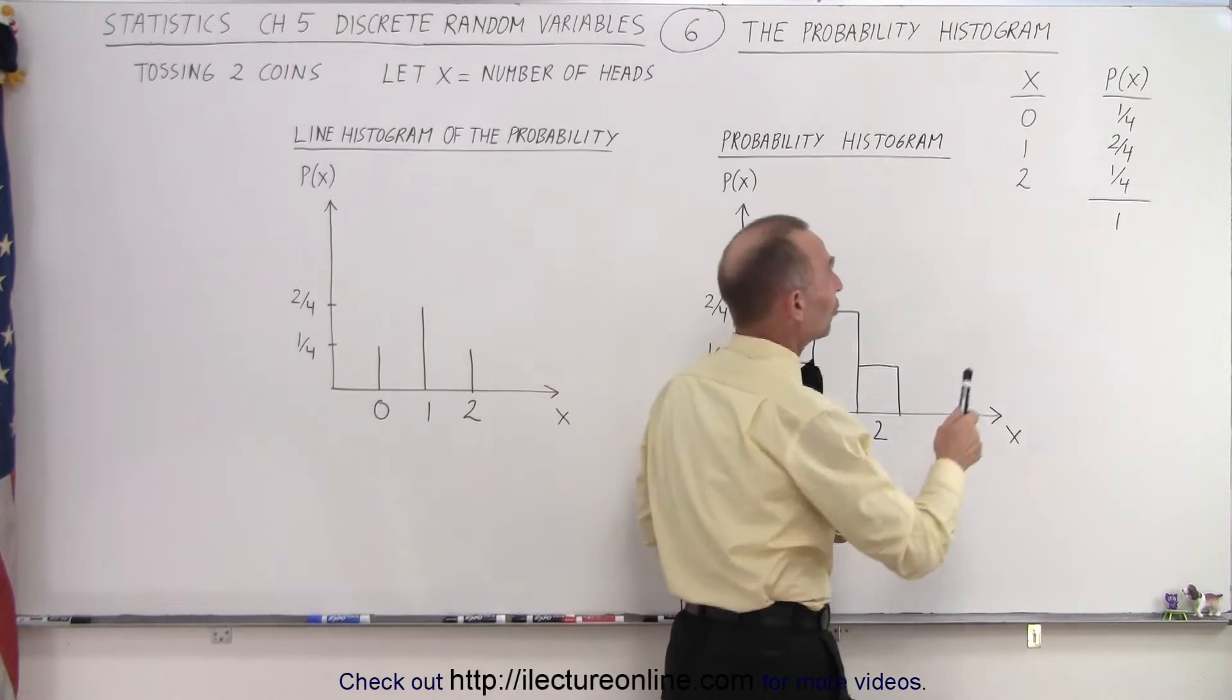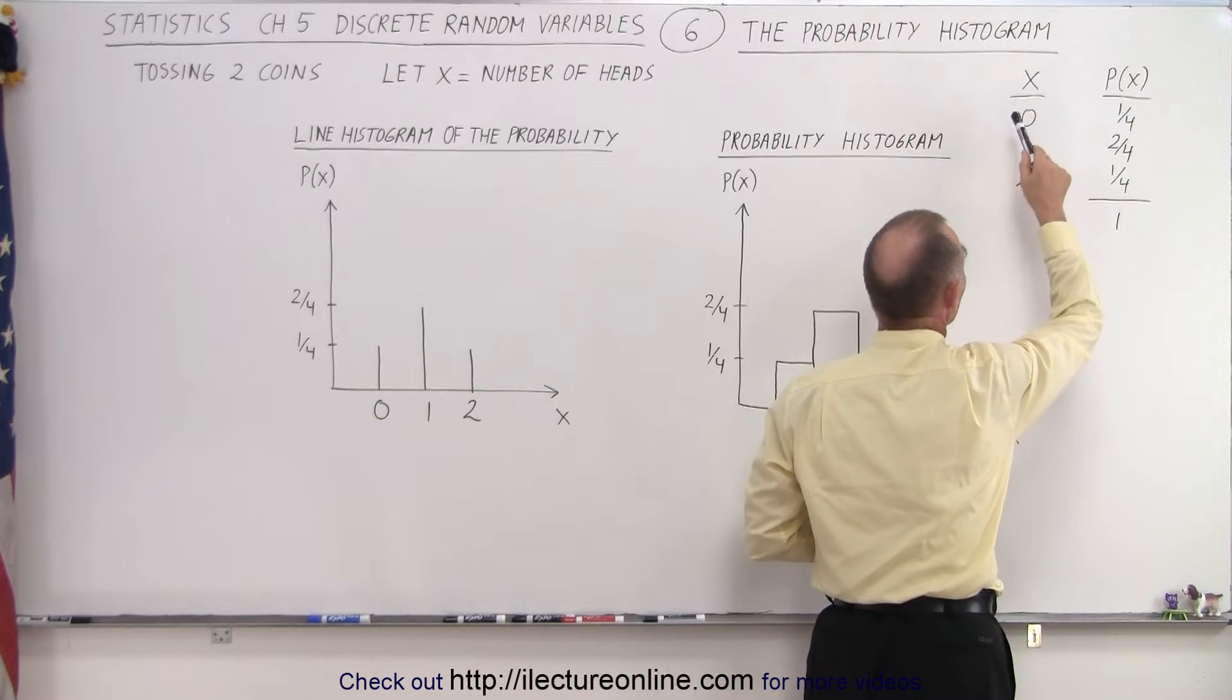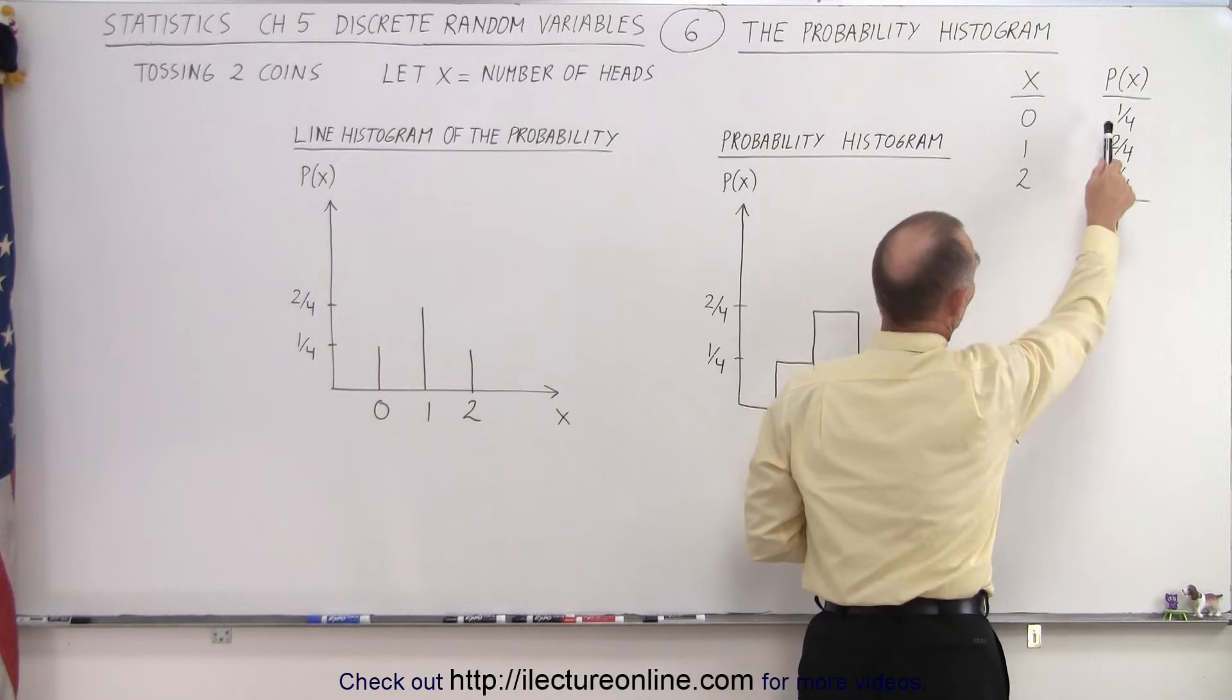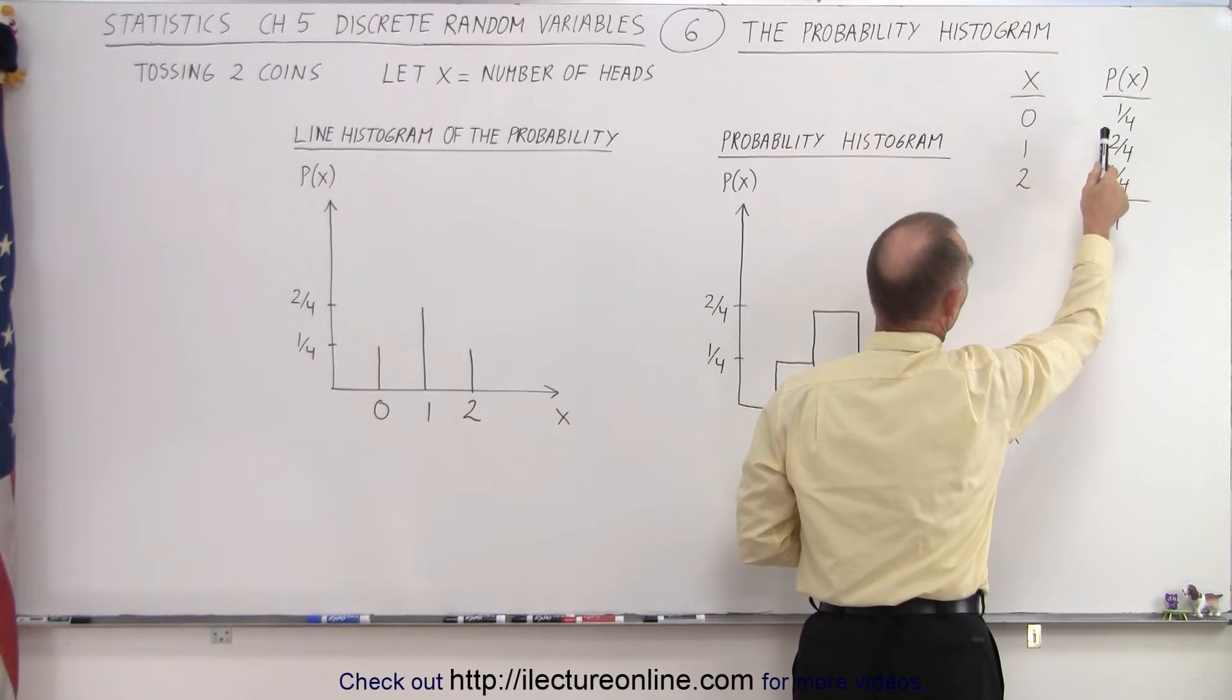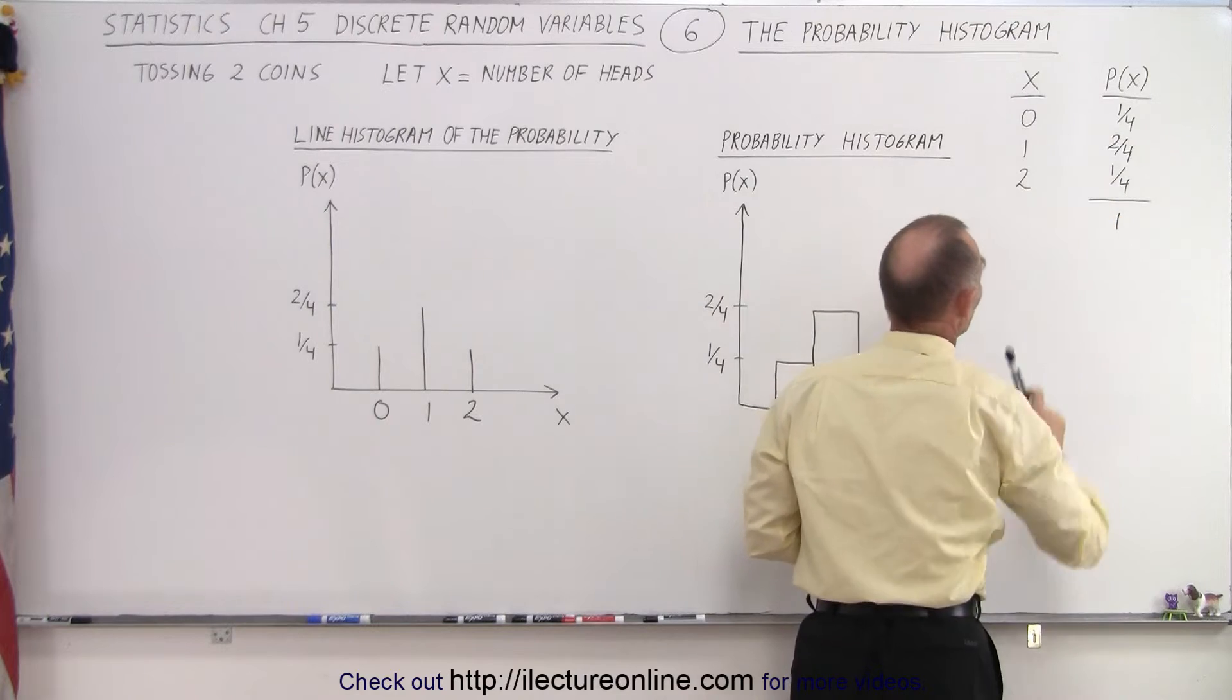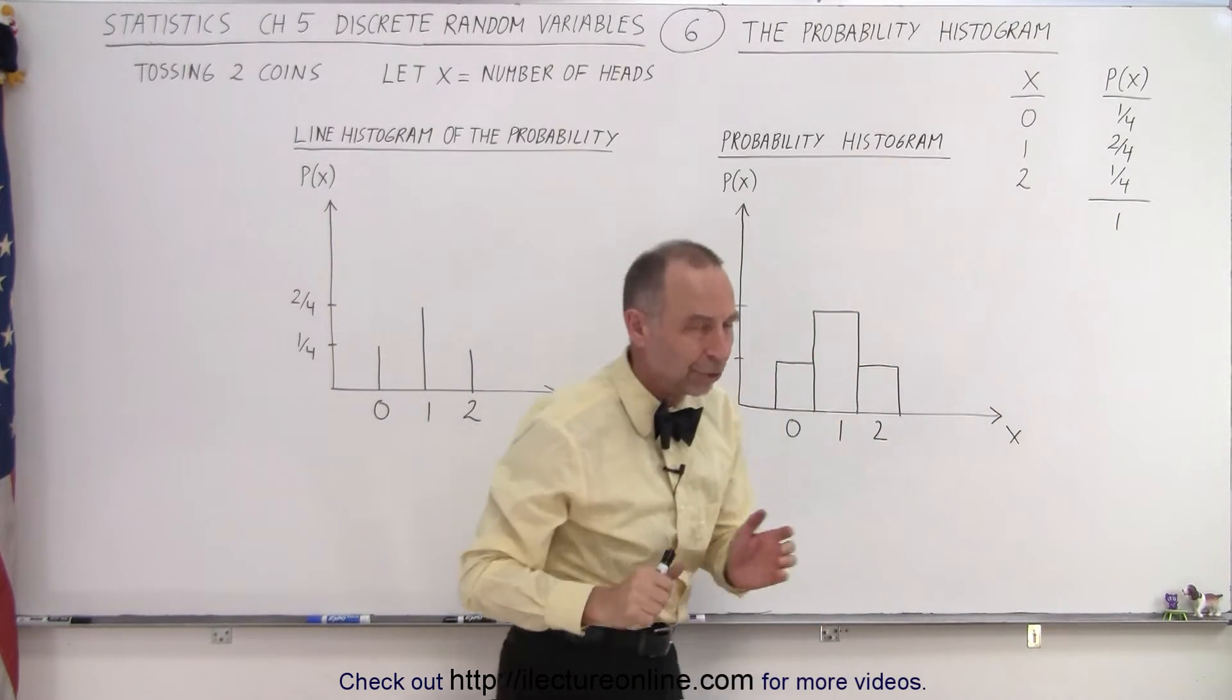Here are the associated probabilities of having 0 heads, 1 head, or 2 heads when we toss two coins. One quarter probability that we'll have 0 heads, two quarters or one half that we'll have 1 head, and one quarter probability that we'll have 2 heads.